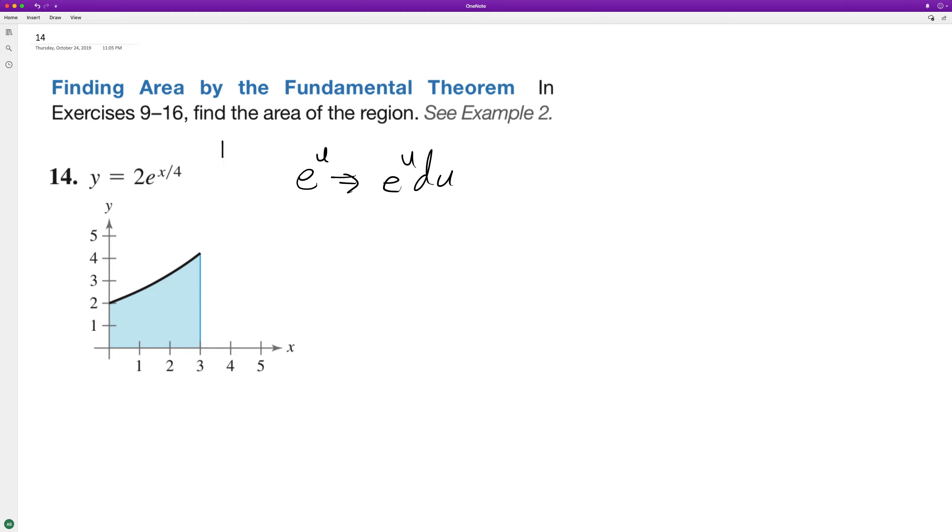So in this case, du is 1 over 4. So dividing 2 e raised to the x over 4 divided by 1 over 4 is going to be equal to 8 e raised to the x over 4.